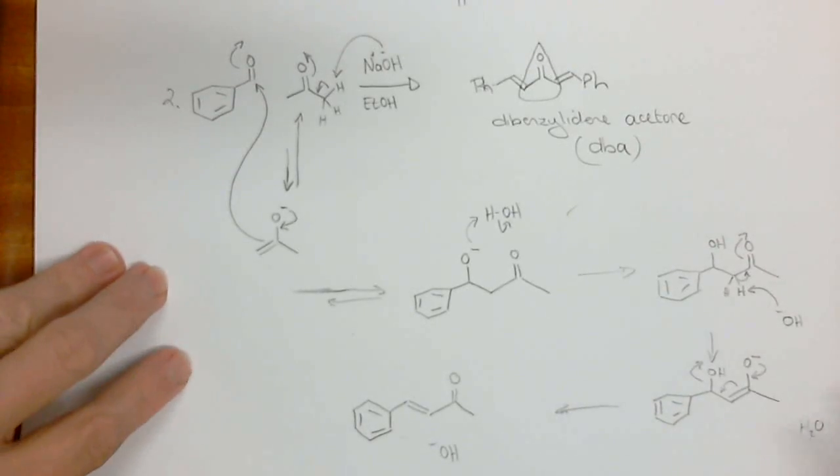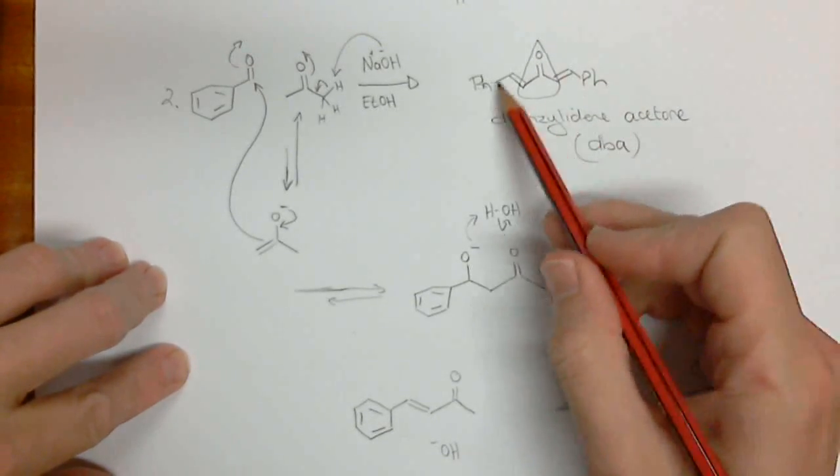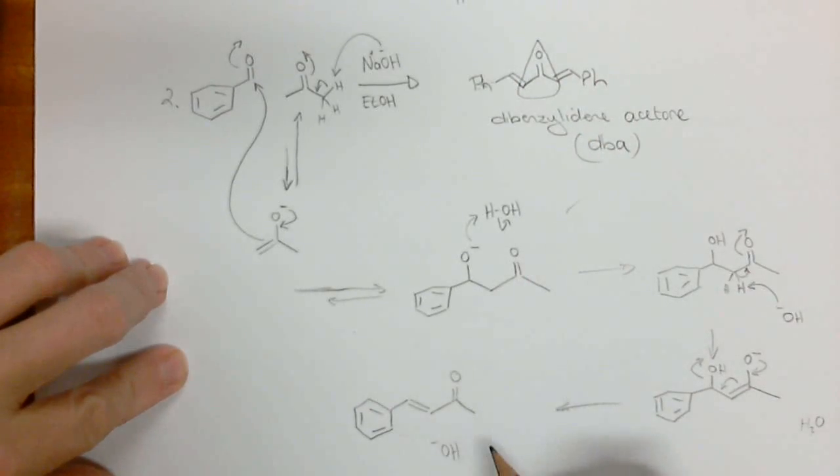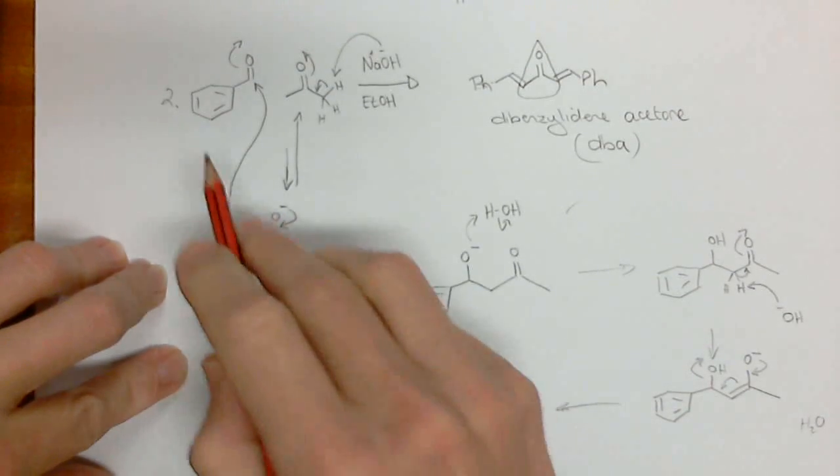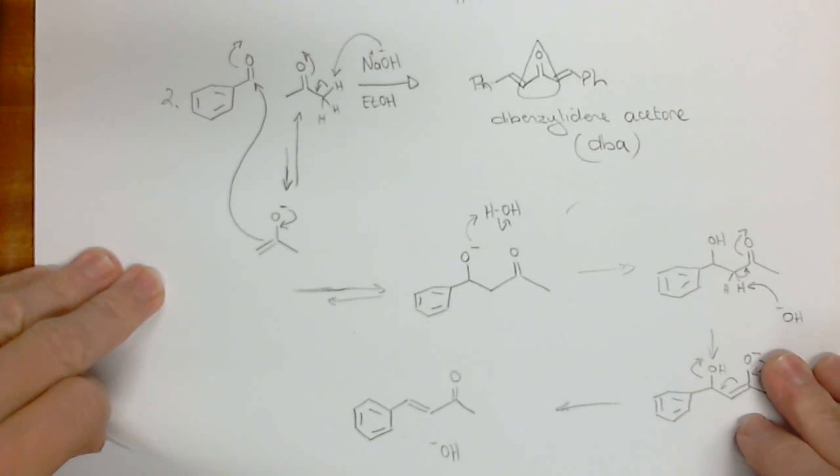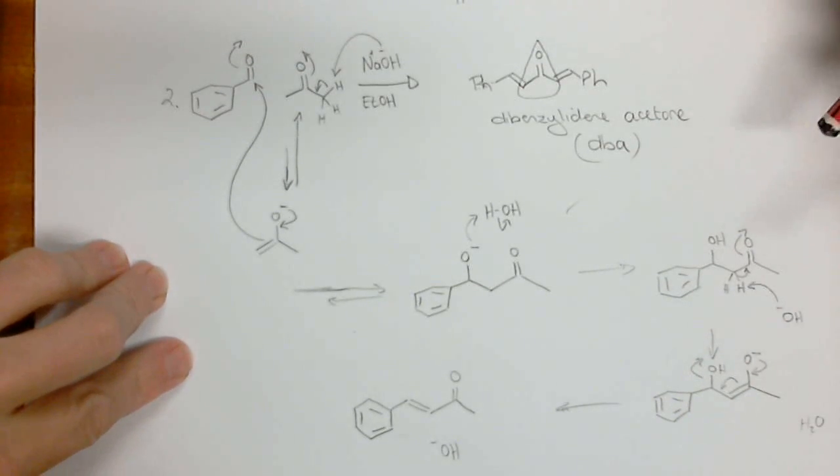What you need to do now is to practice this by taking this molecule over here and doing the reaction again so that you get the final product that I drew out in the beginning. So practice that, do it yourself, take the base, deprotonate, react with the other molecule of benzaldehyde, and make sure that you can actually draw all of those out, and then we'll continue with this work in class on Wednesday.